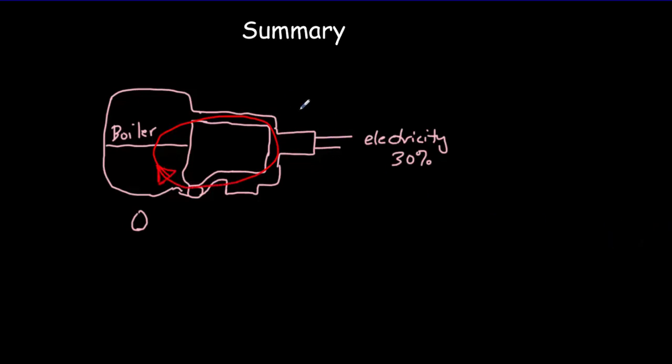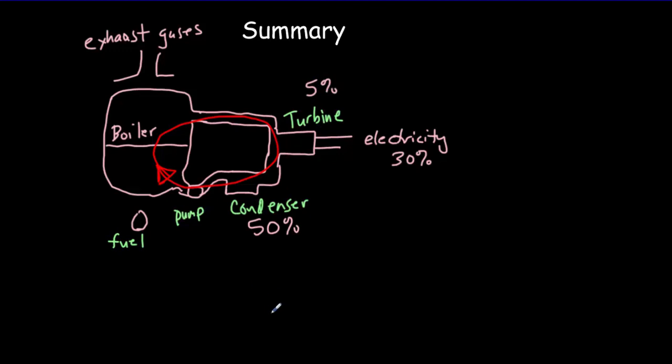So key parts were the turbine, the condenser, the pump, and the fuel. We're going to have losses due to the exhaust gases, usually about 15%. Most of our losses will come from the condenser, about 50% there. And then another 5% due to the moving parts in the turbine and the pump.